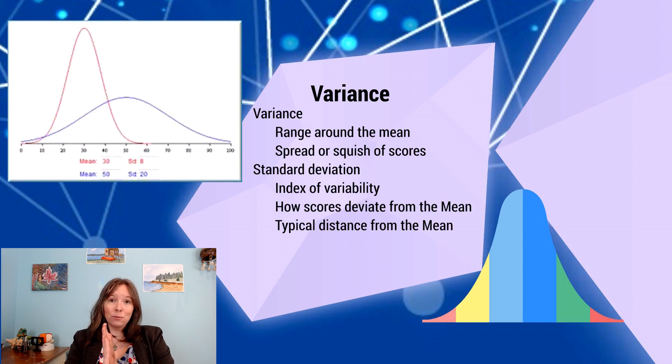So the mean, remember the mean in a normal curve is that center and different scores would be spread or squished away from that. But on average, what's the distance of scores from the mean? On average, what's the distance of scores from the average? As to the typical distance from the mean.